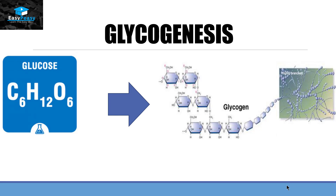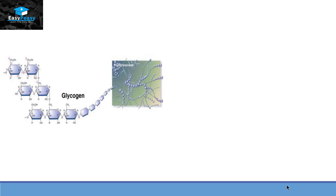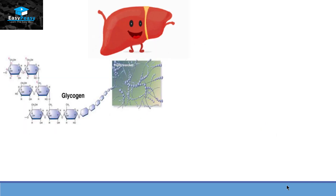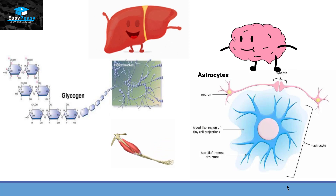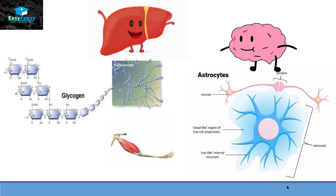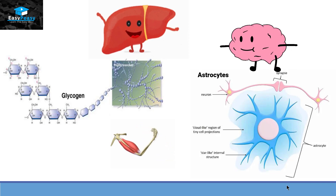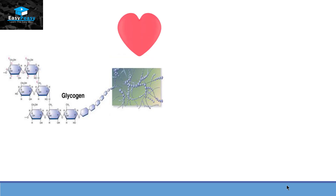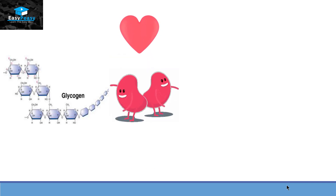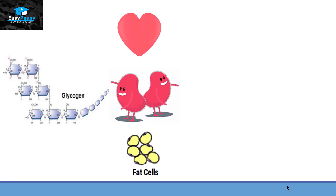This topic will be discussed in a separate video. The excess amount of glycogen will deposit itself in the liver, in muscle cells, and in brain cells — specifically the astrocytes. Other organelles that can also deposit glycogen are heart cells, kidney cells, and fat cells.